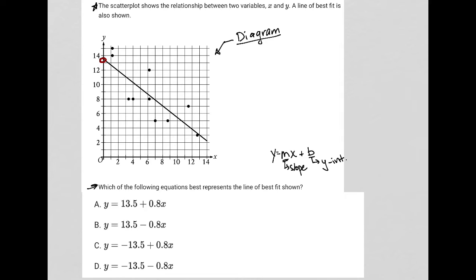Looking at my answer choices, I see that I have 13.5 in choices A and B, and I have negative 13.5 in choices C and D. Just to make a small note before continuing on, the answer choices have converted my y equals mx plus b structure into y equals b plus mx.